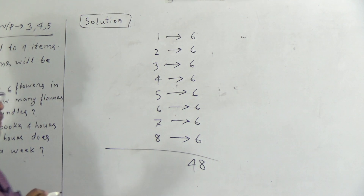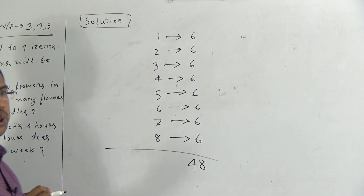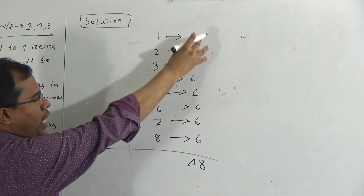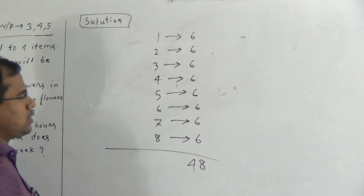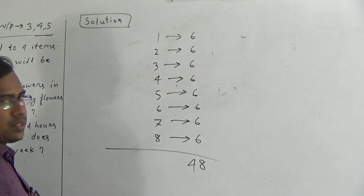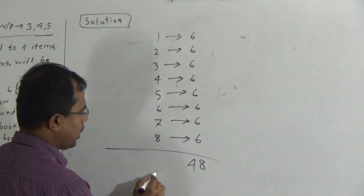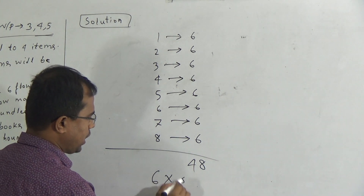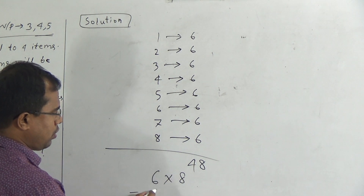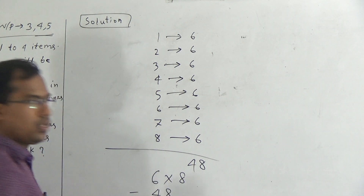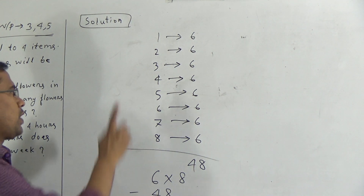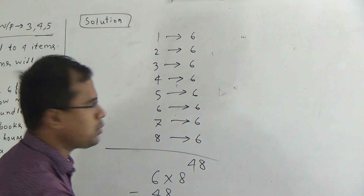And you know that multiplication is the short process of addition. So we need not add these eight sixes. If we multiply 6 by 8, then we can easily get 48 — eight 6s are 48. So for getting the answer, we have to multiply 6 by 8.